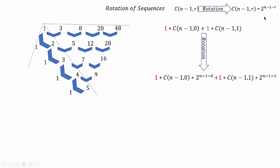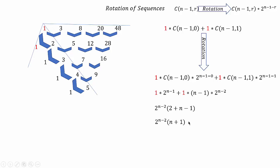On simplification we get the final result. When we plug in n equals 1 we get 1, when we plug n equals 2 we get 3, and when we plug n equals 3 we get 8, and so on.